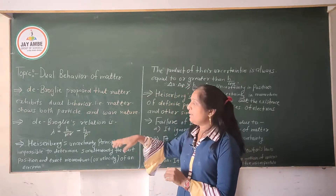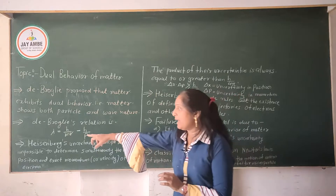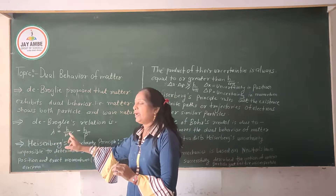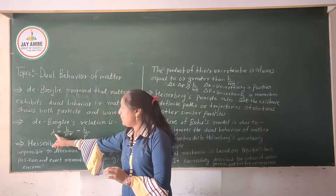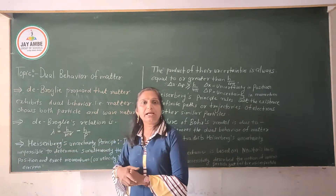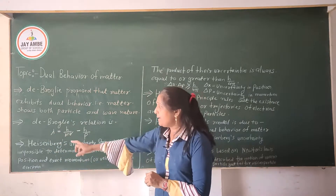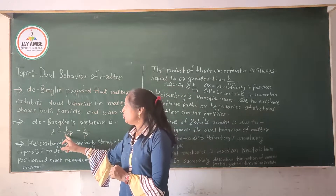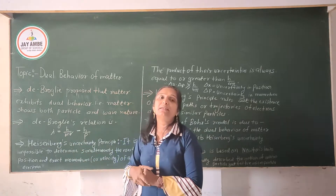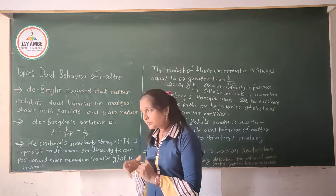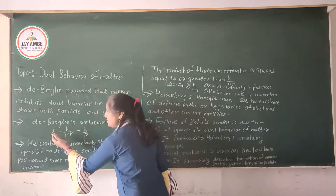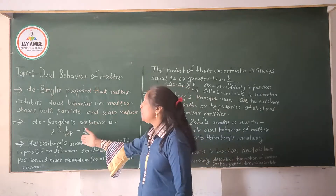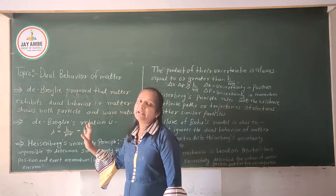I have given this relation: if lambda — this wavelength — is equal to h upon m into v, then lambda equals the wave nature of the matter, and h upon m into v, with mass into velocity, represents the particle behavior of the matter. This wave nature and particle nature are connected by one relation, which we call de Broglie's relation.